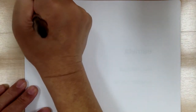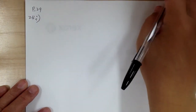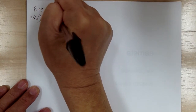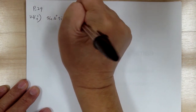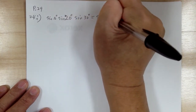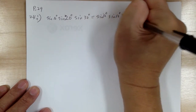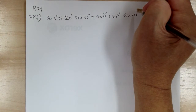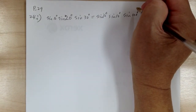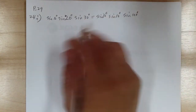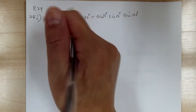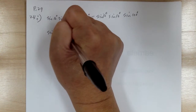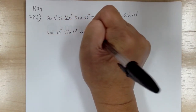Let's do problem 24, part i. You want to prove that sine 10° times sine 20° times sine 30° equals sine 10° times sine 10° times sine 100°. When doing the proof, you can go from either side. For this one, it's probably easier to start from the right side: sine 10°, sine 10°, sine 100°.